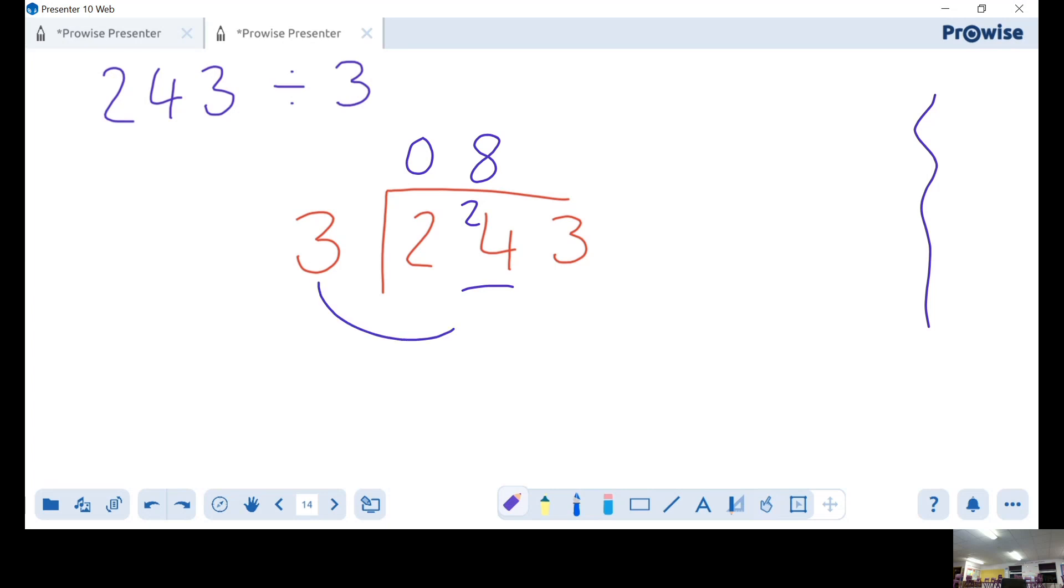Now the last one - how many times does 3 go into 3? Well that's quite a nice one, isn't it? 3 goes into 3 once. So our answer sits on top of the bus stop. The answer to 243 divided by 3 is 81. Nice one.